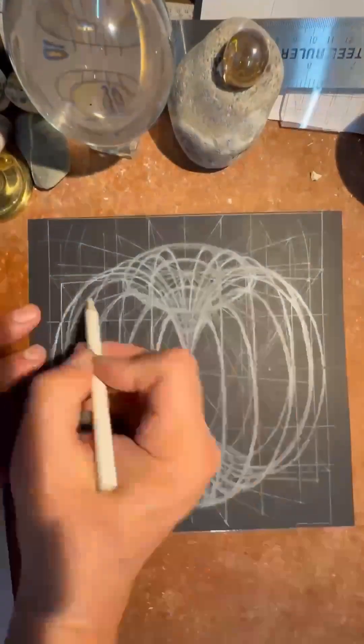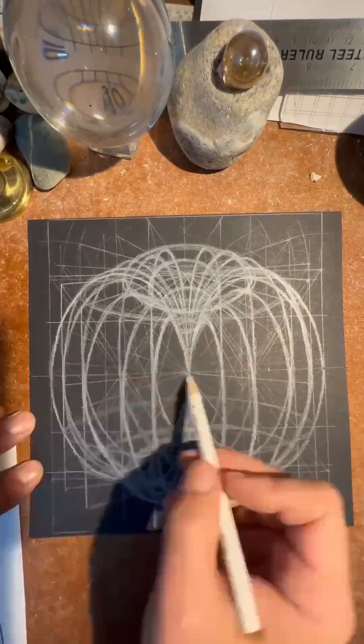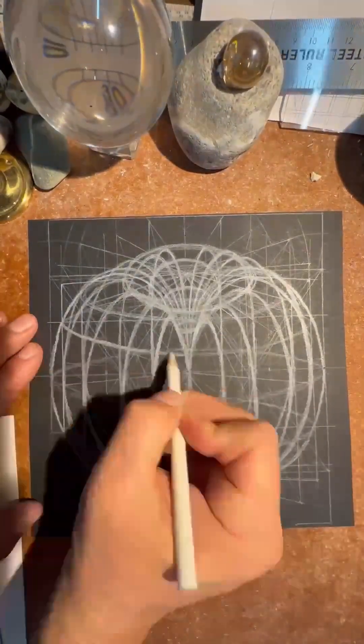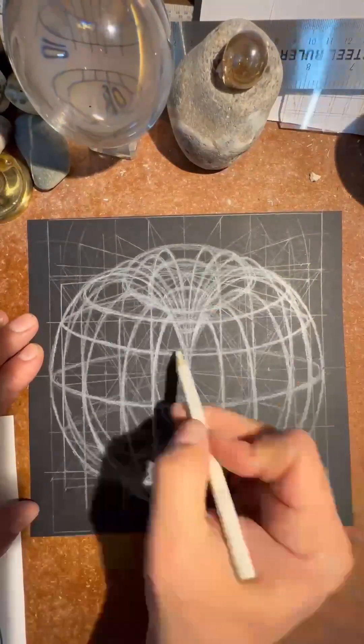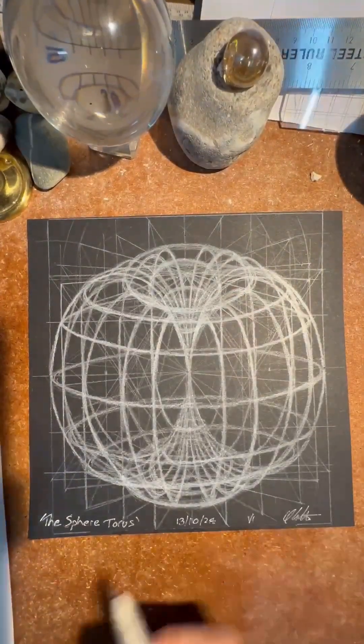Use some straight lines to work out the position of the horizontal ellipses that create the form and shape of the sphere torus. There you go.